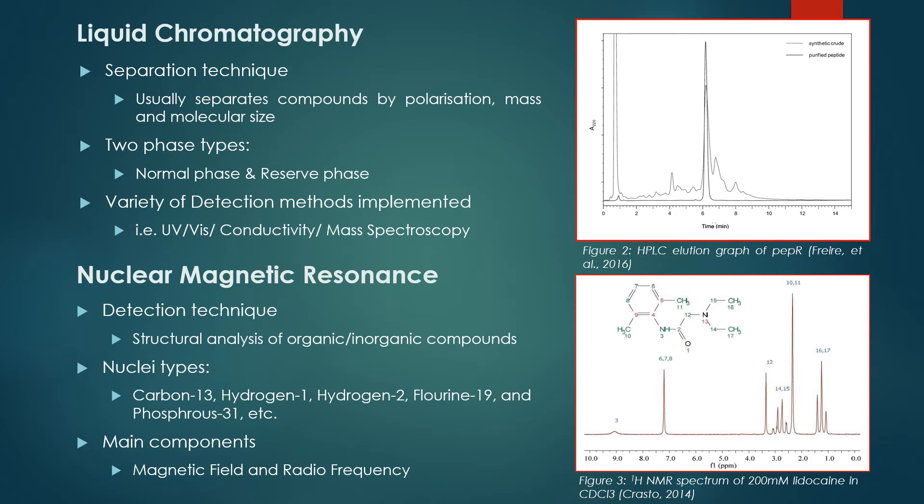There are different types of NMR, specifically to detect certain nuclei, including but not exclusively carbon-13, hydrogen-1, hydrogen-2, fluorine-19, and phosphorus-31.